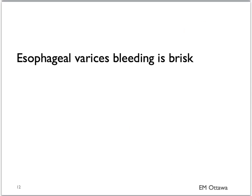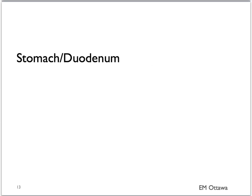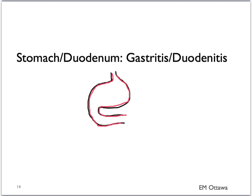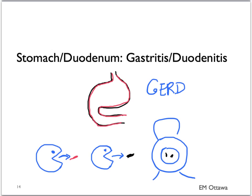Going further distally, upper GI bleed can be bleeding from the stomach or the duodenum. First, inflammation such as gastritis or duodenitis. These have a very similar presentation to patients with esophagitis — they tend to have GERD symptoms. In terms of presentation, it is very similar: it can present as hematemesis, coffee ground emesis, or melena. Blood from gastritis or duodenitis tends to be in small amount as well.